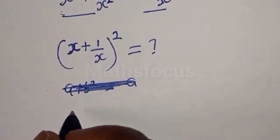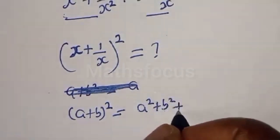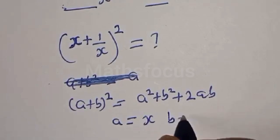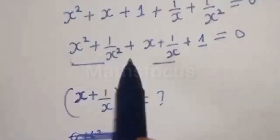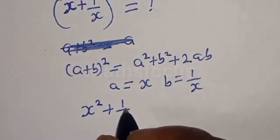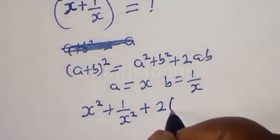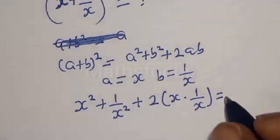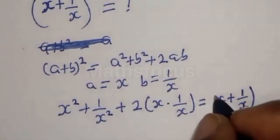Take note of this: if you have a plus b, the whole square, this is equal to a squared plus b squared plus 2ab. From here, let a equal x and b equal 1 over x. Now we want to find the value of x squared plus 1 over x squared. This is x squared plus 1 over x squared plus 2 times x times 1 over x, which equals x plus 1 over x, the whole squared.